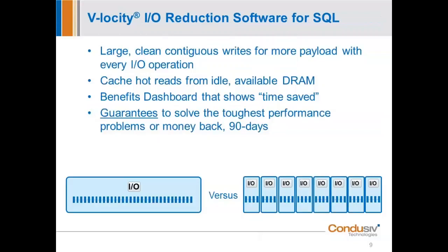What is it we do for SQL? We enable large, contiguous writes for more payload with every IO operation. We'll talk about the DRAM caching engine that drives incredible performance improvements in SQL and other applications. Any and all heavy IO-intensive Microsoft applications benefit from our DRAM caching. GQ and his team developed a dashboard to show you what the software is doing in your environment. We trademarked the "set it and forget it" moniker years ago — all operations are fully automated, so there's really nothing for you to do. And we guarantee to solve your toughest performance problems, no harm, no foul, or money back.